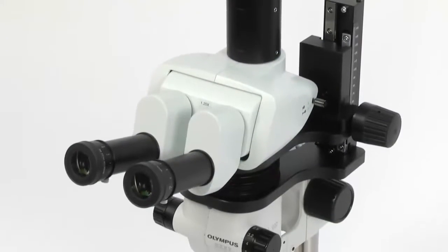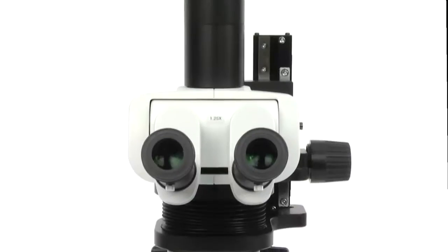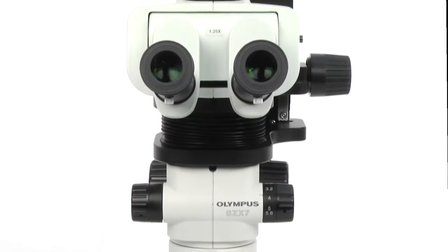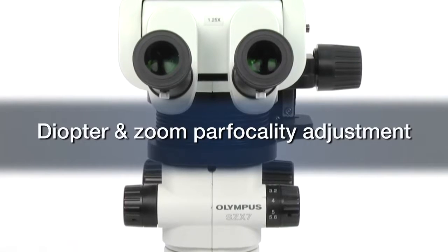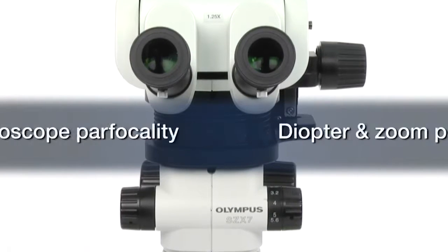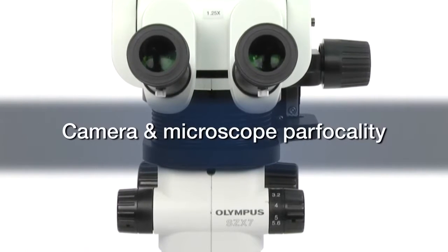For stereo microscopes, three of the most important and often overlooked elements of microscope setup are interpupillary adjustment, diopter and zoom parfocality adjustment, and camera and microscope parfocality.